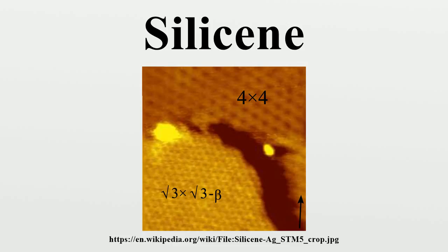The buckling of the hexagonal structure of silicene is caused by pseudo-Jahn-Teller distortion. This is caused by strong vibronic coupling of unoccupied molecular orbitals and occupied molecular orbitals.